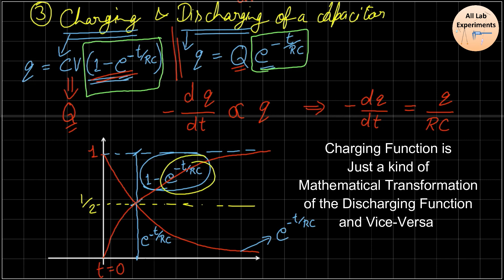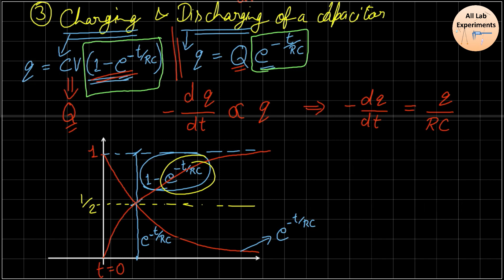As a summary, wherever you see e raised to the power of some function, at the back end you will find some quantity that is changing and whose change is proportional to that quantity itself. Just because nature behaves this way, e^x is so popular and highly visible in physics. Hope you liked this short lecture series — if you have any queries, leave a comment and give suggestions for future videos.